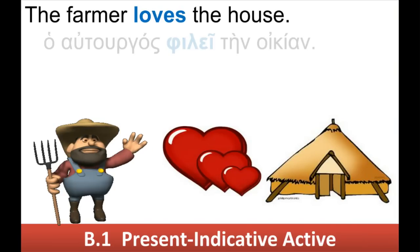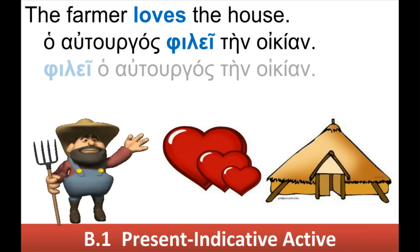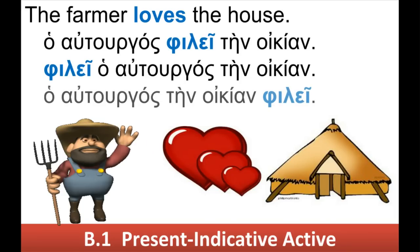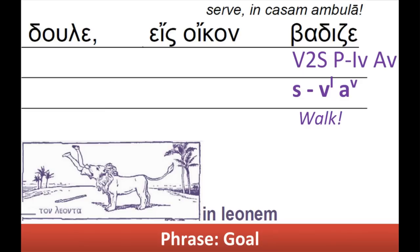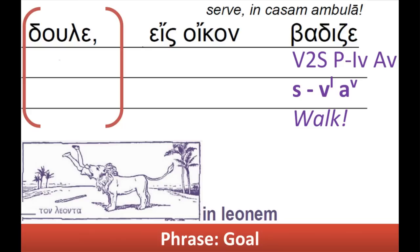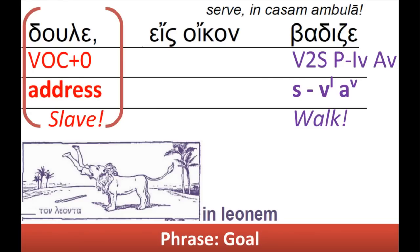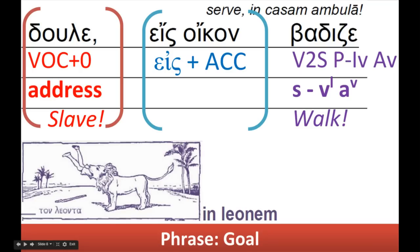In the indicative, we have tense — 'the farmer loves the house.' But in the imperative, you have a shortened version. Second singular: Walk. There is no tense; it's a volative mood. 'O slave, come.' Ace plus accusative is the same as 'in' plus accusative in Latin — 'into the house.' A goal phrase.